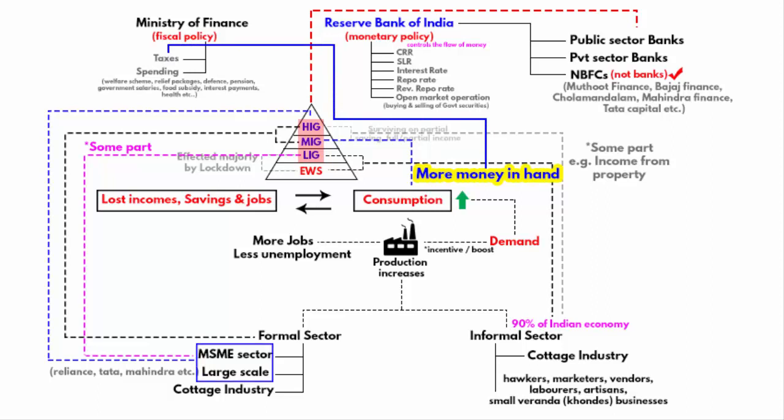The idea behind this is that when people have more money in their hands they will spend more. However, for the next three months, companies also have to pay a little less on PF, so this move directly helps businesses as well.